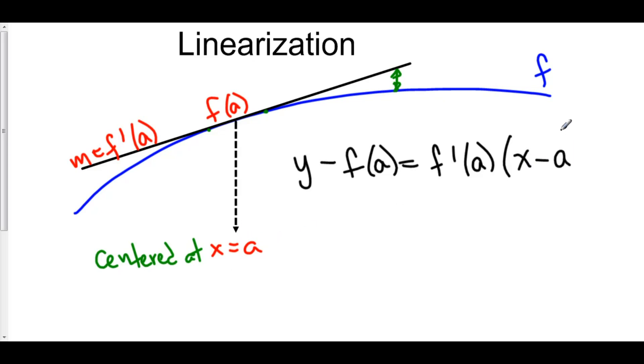And then, of course, if we move everything to the right-hand side, we now have y is equal to f of a, plus f prime of a, times x minus a.